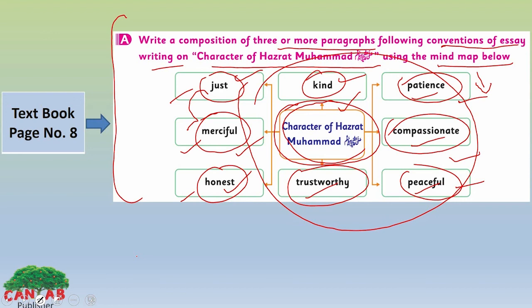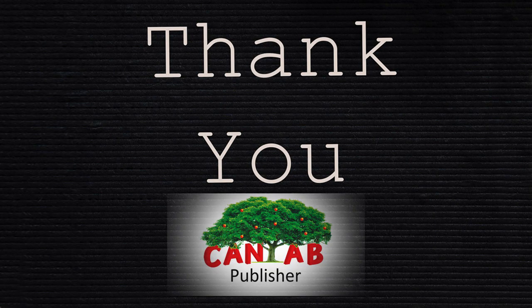You can write the main points in your mind map: kind, patient, compassionate, peaceful, trustworthy, honest, and merciful. You can find additional information in your textbook and from your general knowledge about Hazrat Muhammad (SAW). I hope, dear students, you have enjoyed my lesson.